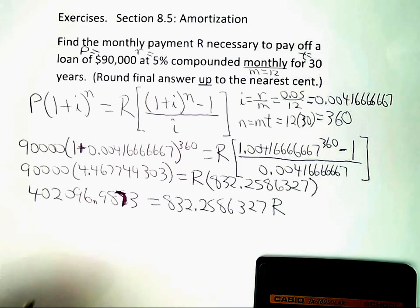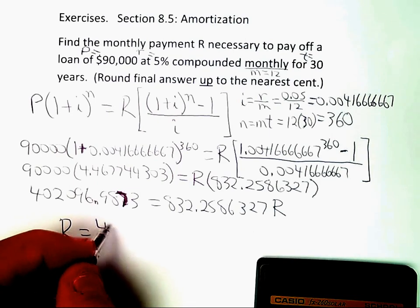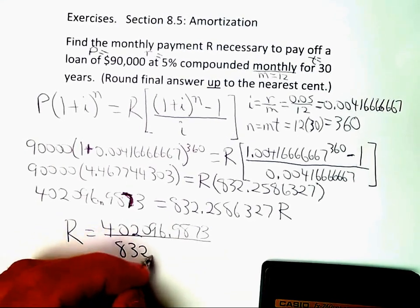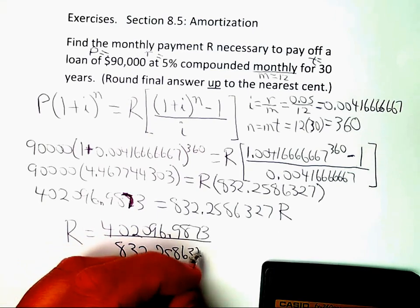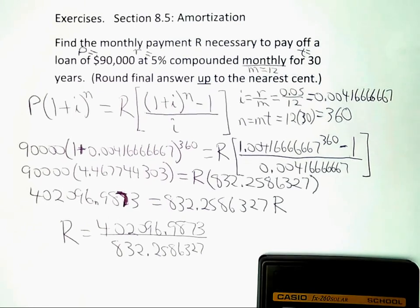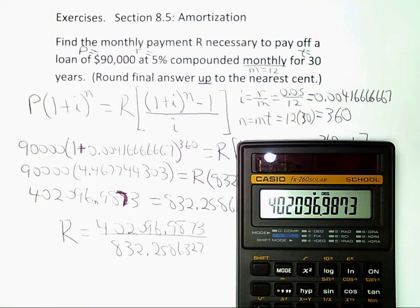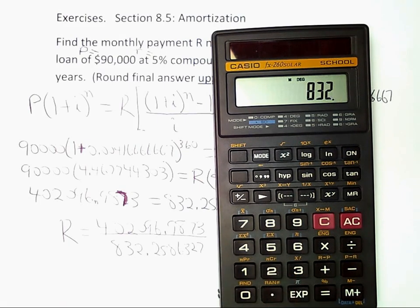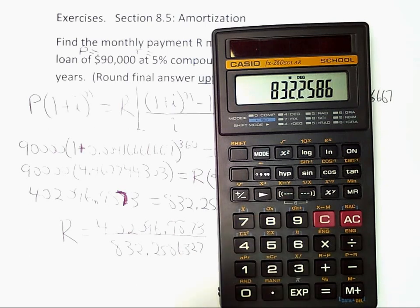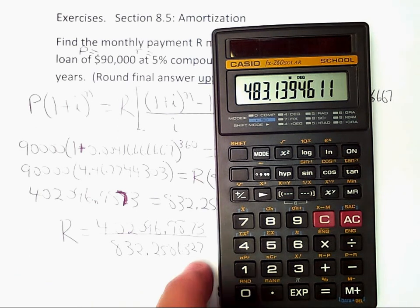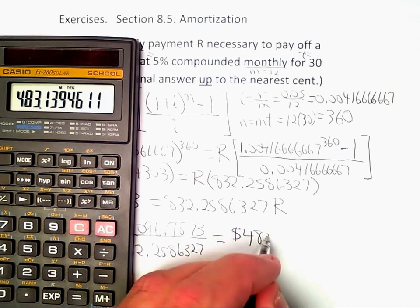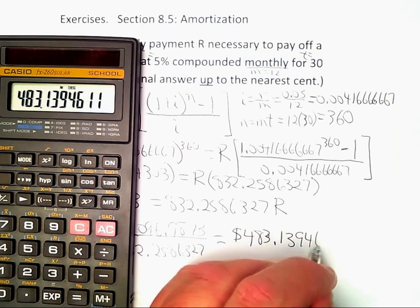So to solve for R, I just have to do the division. So I get capital R is equal to 402096.9873 divided by 832.2586327. And when I do that division, I get a value of R of 483.1394611.